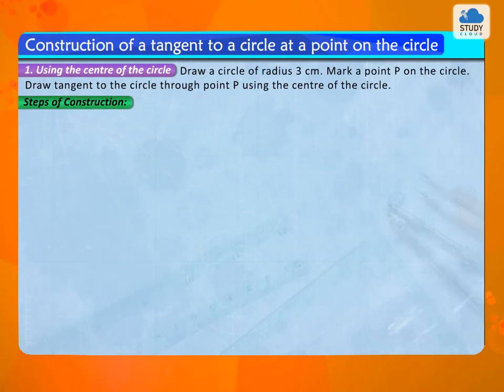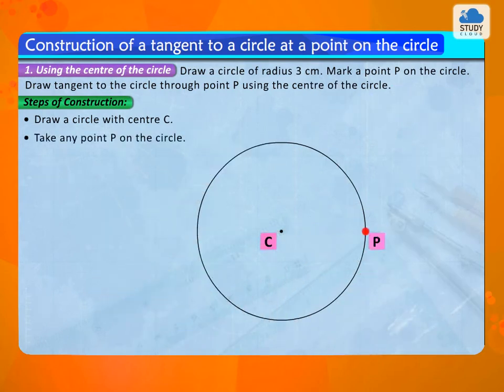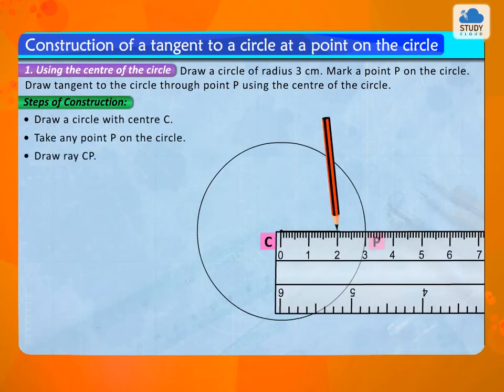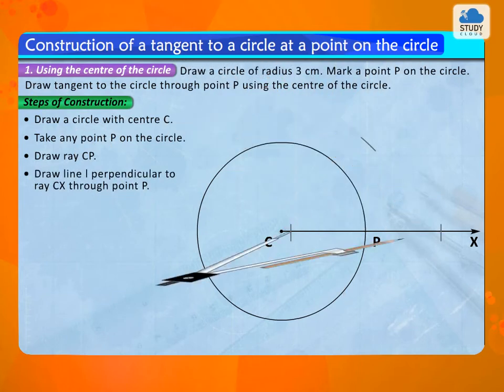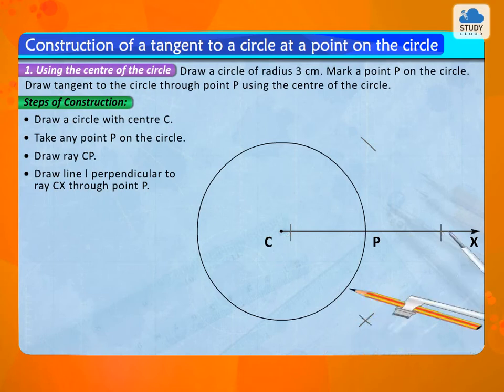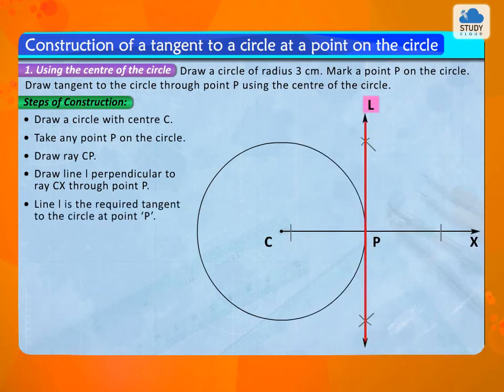Steps of construction: Draw a circle with center C. Take any point P on the circle. Draw radius CP. Draw line L perpendicular to radius CP through point P. Line L is the required tangent to the circle at point P.